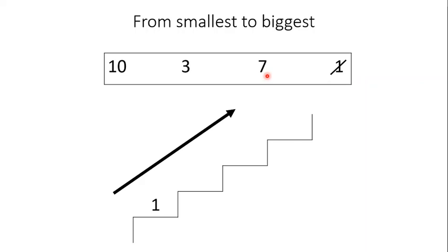Now we have three numbers left: 10, 3, and 7. Which number is the smallest? Yes, you are correct. Number 3 is the smallest. Now we have two numbers: 7 and 10. Which number is smaller? 7.